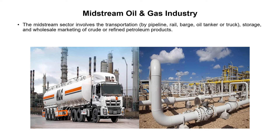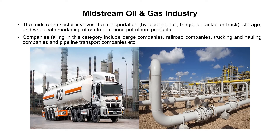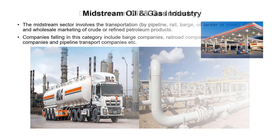The midstream sector involves the transportation by pipeline, rail, barge, oil tanker, or truck, as well as storage and wholesale marketing of crude or refined petroleum products. Simply put, the midstream oil and gas industry is a linkage between the upstream and downstream industries. Companies in this category include barge companies, railroad companies, trucking and hauling companies, and pipeline transport companies.